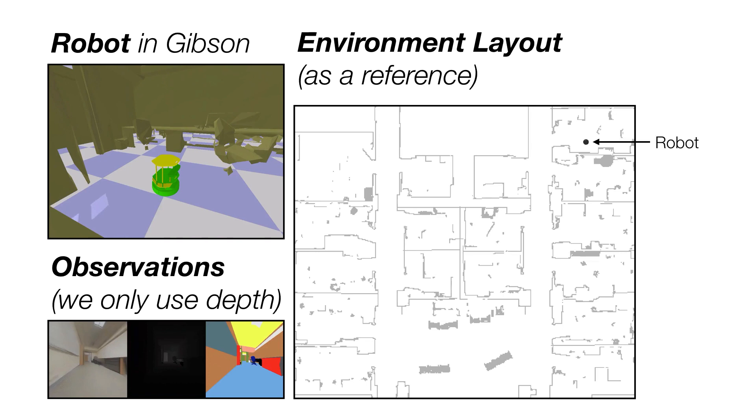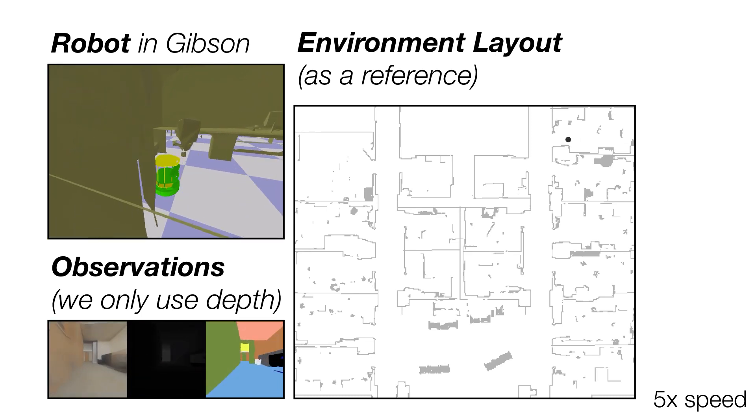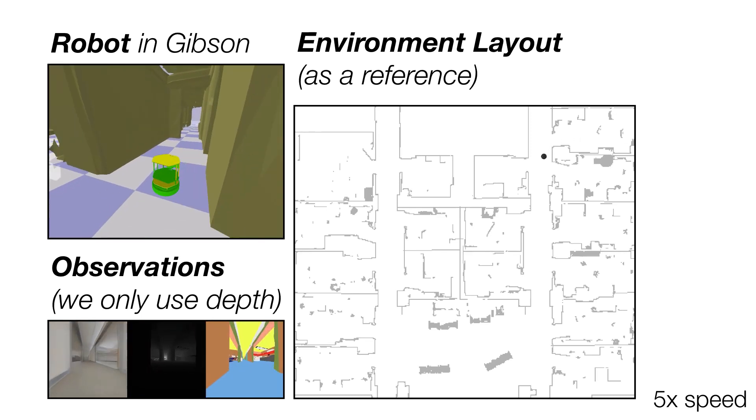On the right is the layout of the environment. The robot navigates from the room in the top right corner all the way to a room in the middle of the space. The robot is able to complete a long navigation task in this complex environment.